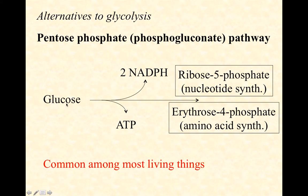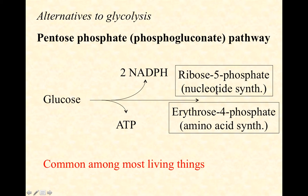In the pentose phosphate pathway, a six-carbon glucose is rearranged into two possible molecules: ribose 5-phosphate or erythrose 4-phosphate. Ribose and erythrose are different sugars — we're just rearranging glucose into either one and phosphorylating it. Ribose 5-phosphate is an important precursor for building nucleotides, and erythrose 4-phosphate is an important precursor for building amino acids. We get one ATP per glucose — half of what glycolysis yields — and it is by substrate level phosphorylation.